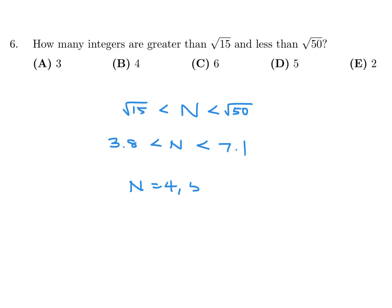So how many numbers that are integers are between 3.8 and 7.1? Well, I think that's 4, 5, 6, and 7. So there's four of them. And therefore, number 6, the answer is B.